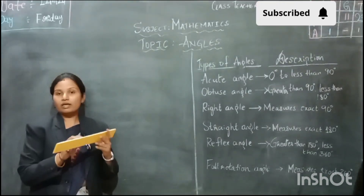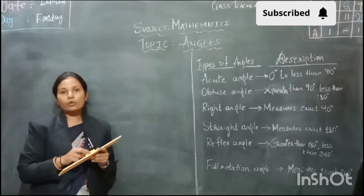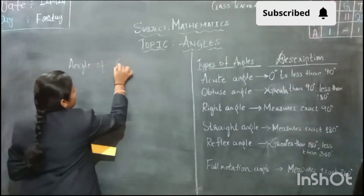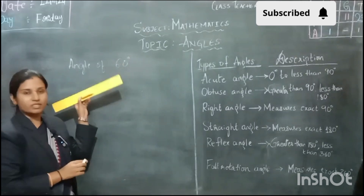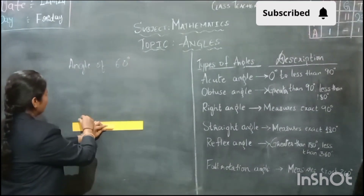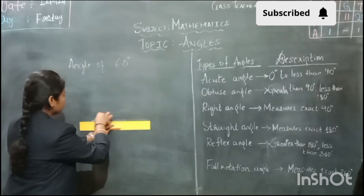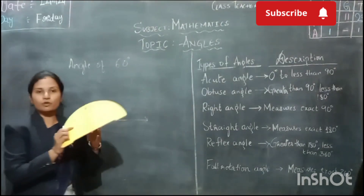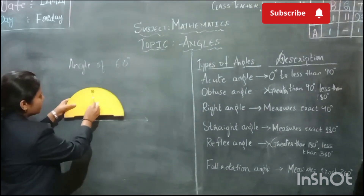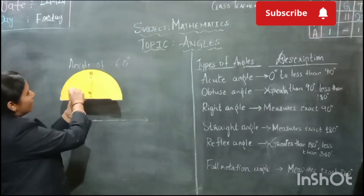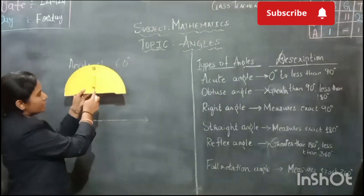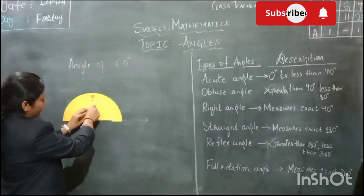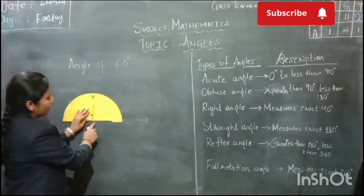First, we will use a scale. For example, if I want to draw an angle of 60 degrees, first I will draw a straight line. This is called a baseline. We will draw this line and then use our protractor. This is the inner circle and this is the outer circle. This is the exact center part of the protractor. We should place this center part of the protractor at this end of our line segment.